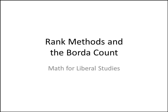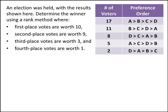In this video, we'll learn how to use rank methods in the Borda count to find the winner of an election. Let's consider this problem. An election was held, with the results shown here. Determine the winner using a rank method where first place votes are worth 10, second place votes are worth 9, third place votes are worth 3, and fourth place votes are worth 1.